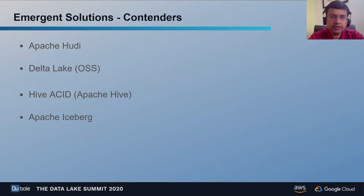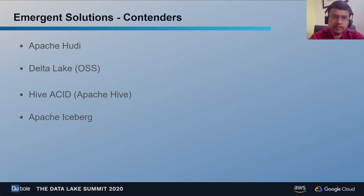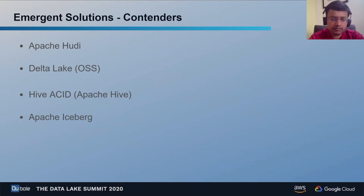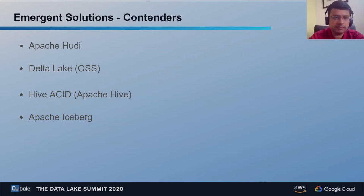In the last few years, a number of solutions have emerged. I've listed four predominant projects providing a new generation of transactional data manipulation in the cloud: Apache Hudi, which came from Uber; Delta Lake, specifically the open-source version from Databricks; the Hive ACID framework from Hortonworks and Cloudera, part of Apache Hive; and finally Apache Iceberg, the newest of the lot, which came from Netflix. Each has gotten different traction in certain subsets of the ecosystem.